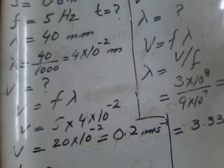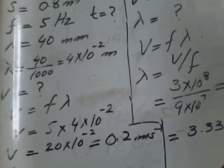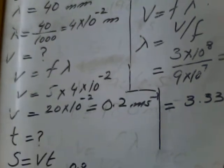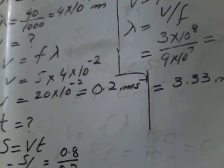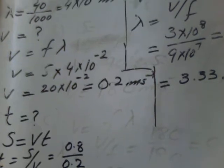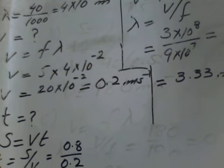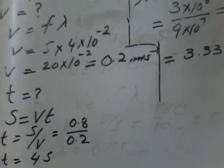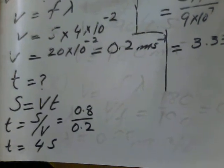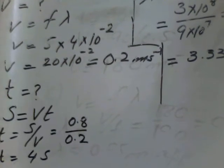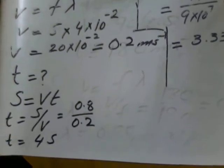So speed or velocity is equal to f lambda. After putting the values and solving, 5 into 4 into 10 raised to power minus 2, while we multiply and simplify, we get 0.2 meter per second.